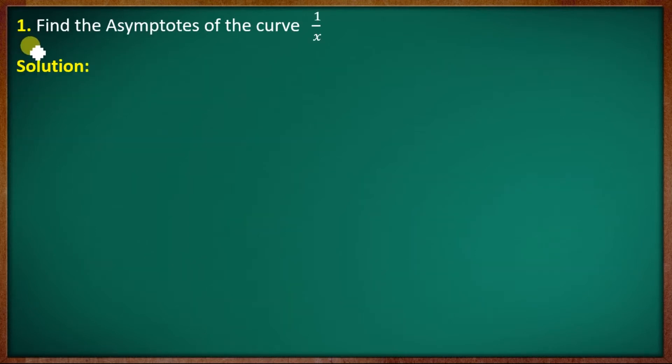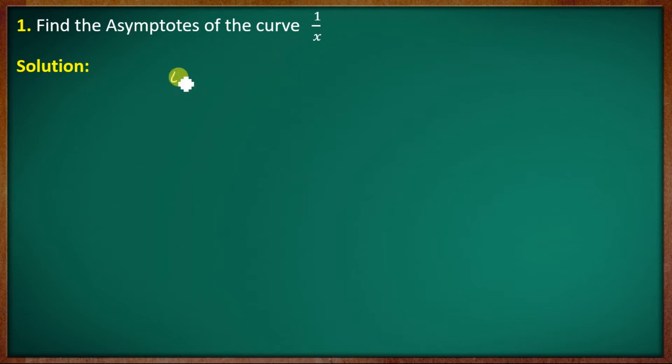First of all, find the asymptotes of the curve y equal to 1 by x. Let y equal to 1 by x.